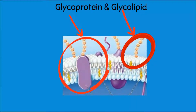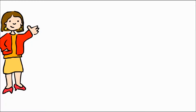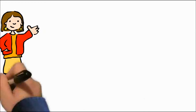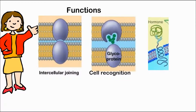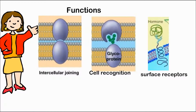Glycolipids and glycoproteins have very similar functions. They act as adhesive sites, helping cells attach to one another to form tissue. They act as cell recognition sites, allowing cells to recognize one another — for example, lymphocytes can recognize an organism's own cells. They also act as cell surface receptors for hormones, neurotransmitters, and drugs.